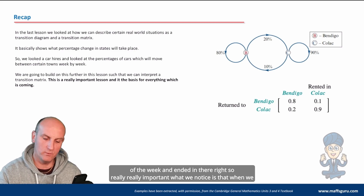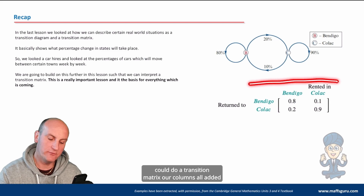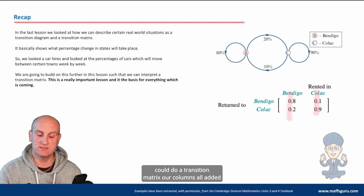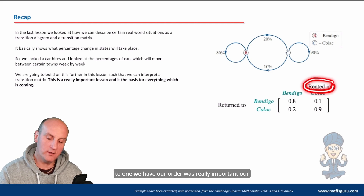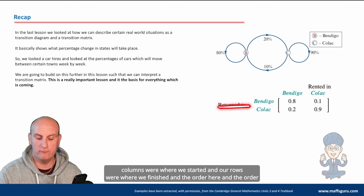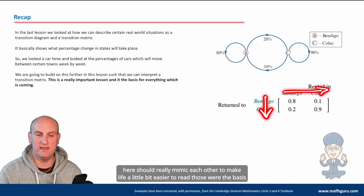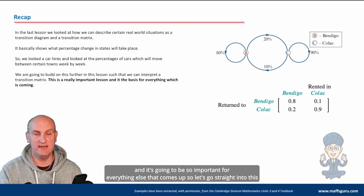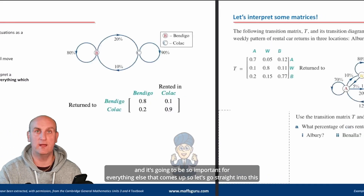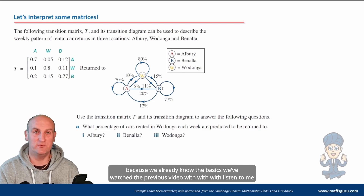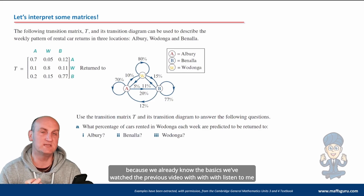A transition diagram basically shows the changes from one state to another, and these percentages relate to the percentages of cars that started in each place at the beginning of the week and ended there. What we notice is that in the transition matrix, our columns all add to one. Our columns were where we started and our rows were where we finished — and the order here and there should mimic each other to make life easier to read. Those are the basics, and it's going to be so important for everything else.